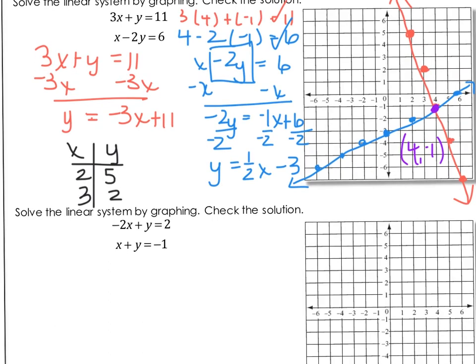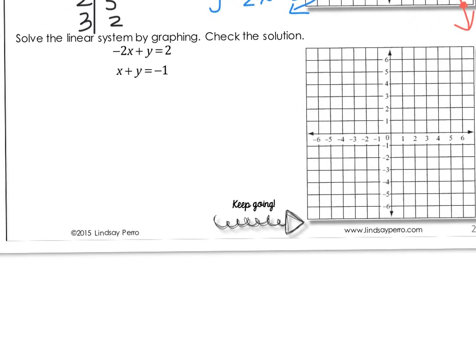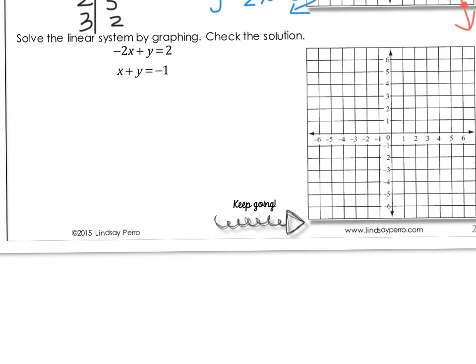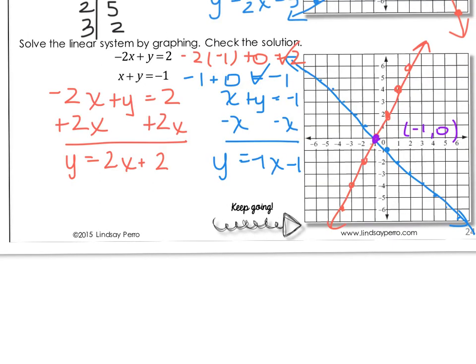Now would be a good time to pause and try the last one on your own and see how well you're doing. When I rewrote both equations, they became Y equals 2X plus 2 and Y equals negative X minus 1. My point of intersection was at negative 1, 0. Plugging in: 2 times negative 1 is negative 2, plus 0 equals 2 — true. And negative 1 plus 0 is negative 1, which equals negative 1 — it checks.